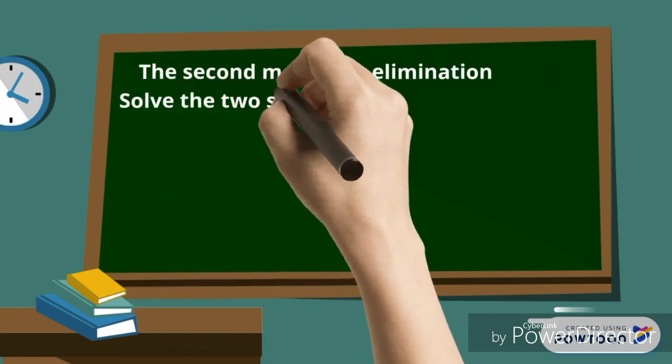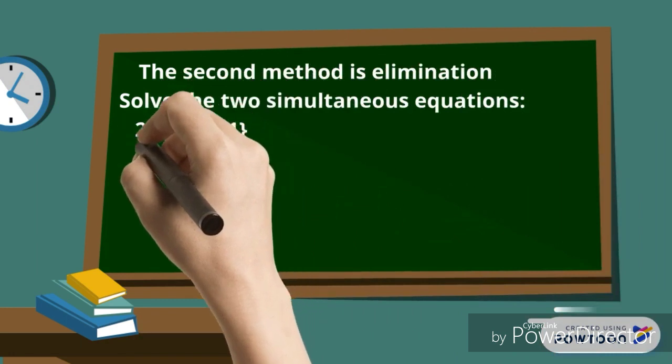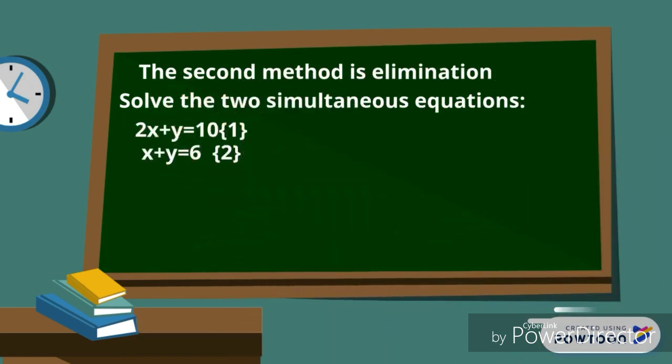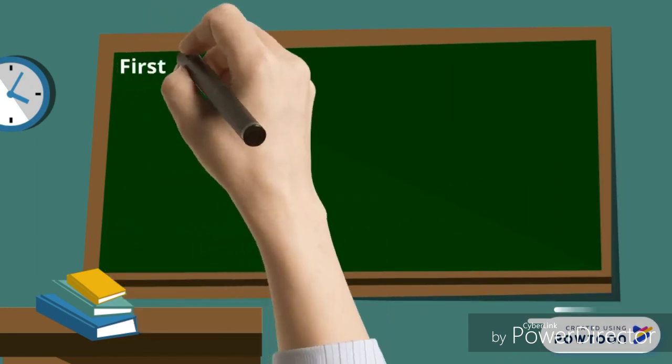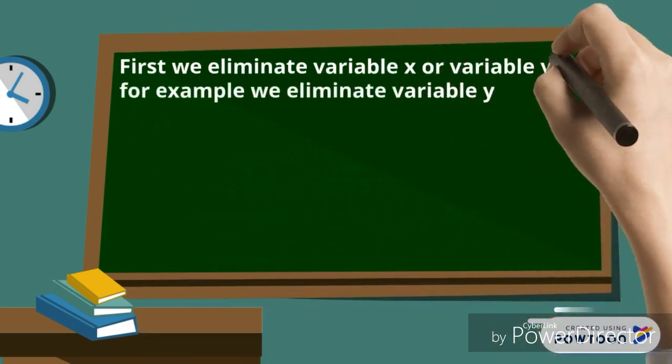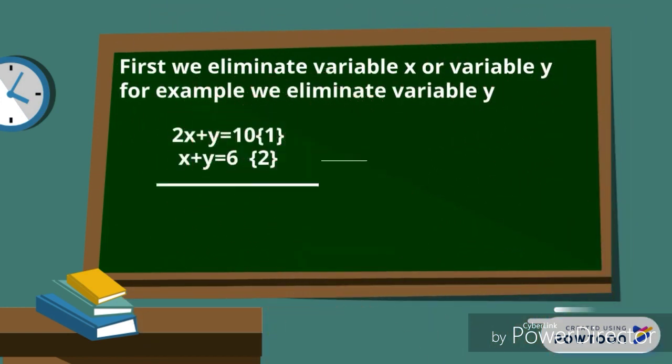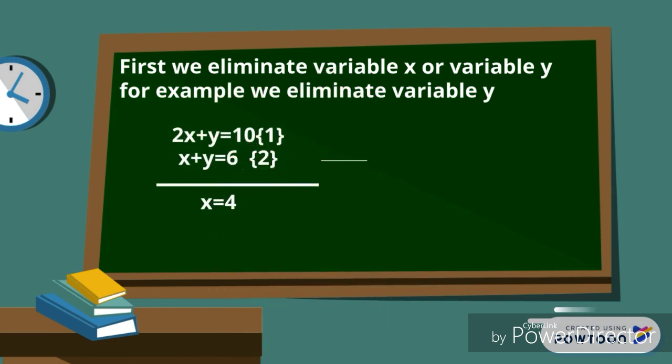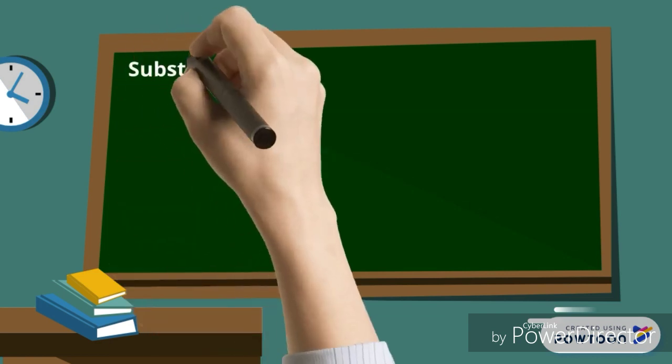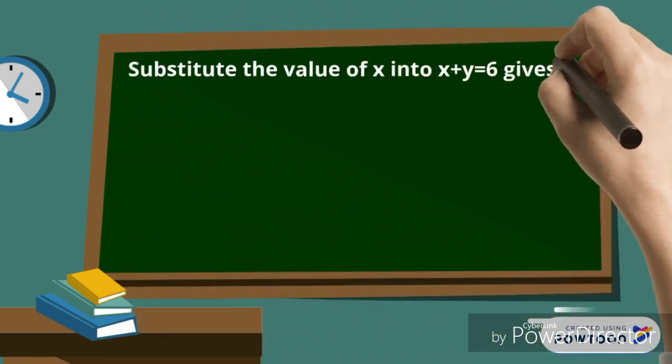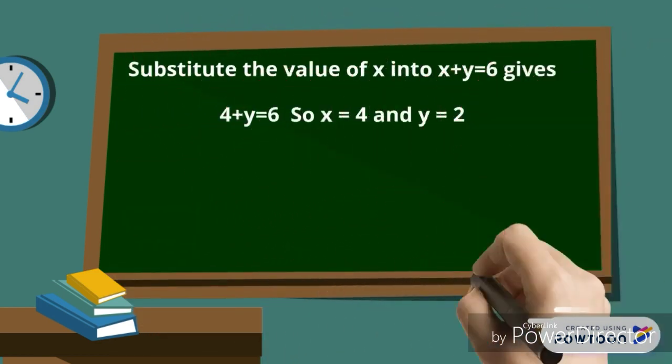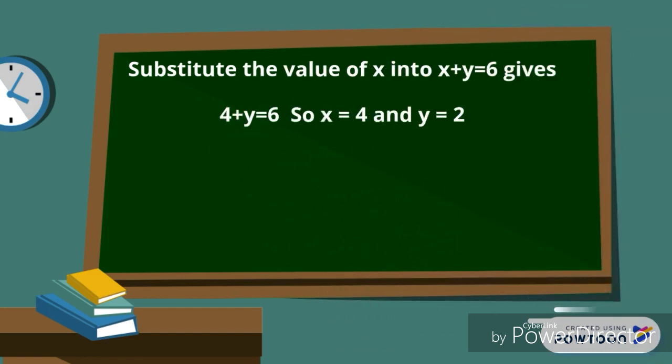The second method is elimination. First, we eliminate variable x or variable y. For example, we eliminate variable y. Substitute the value of x into the second equation or the first equation.